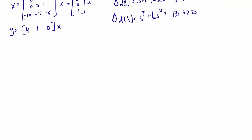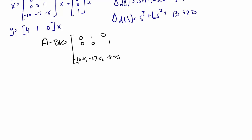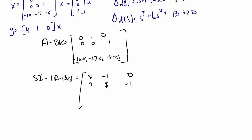We repeat the process and find A minus BK in controller canonical form: [[0, 1, 0], [0, 0, 1], [-(10+k1), -(17+k2), -(8+k3)]]. Then SI minus (A minus BK) equals [[s, -1, 0], [0, s, -1], [(10+k1), (17+k2), (s+8+k3)]].